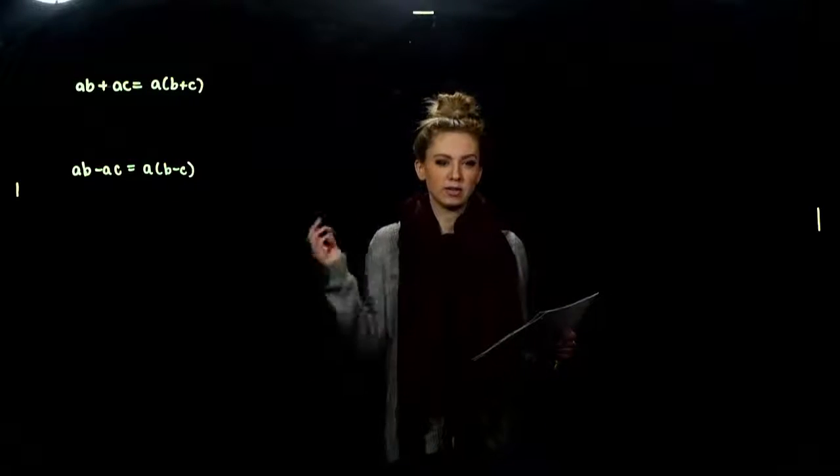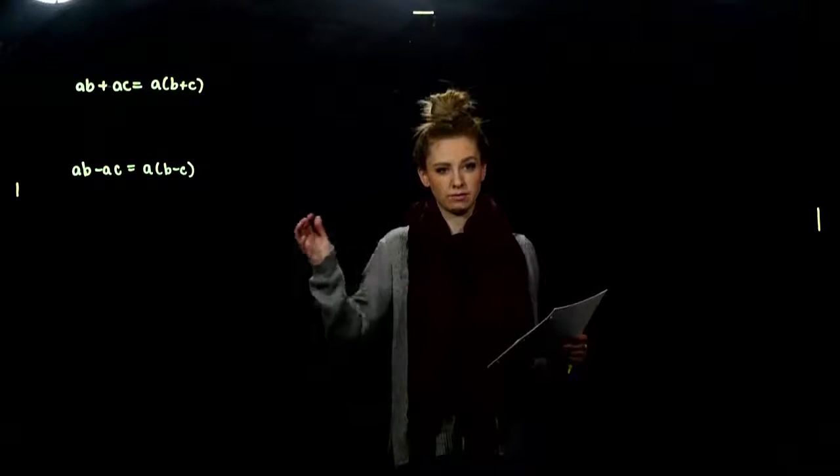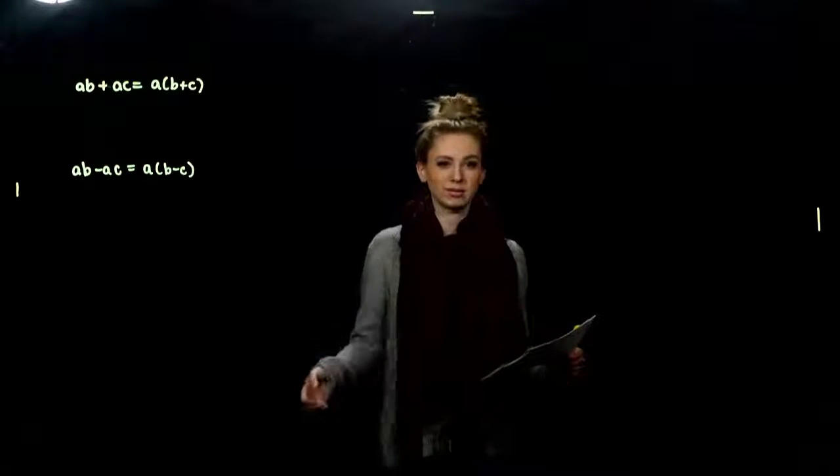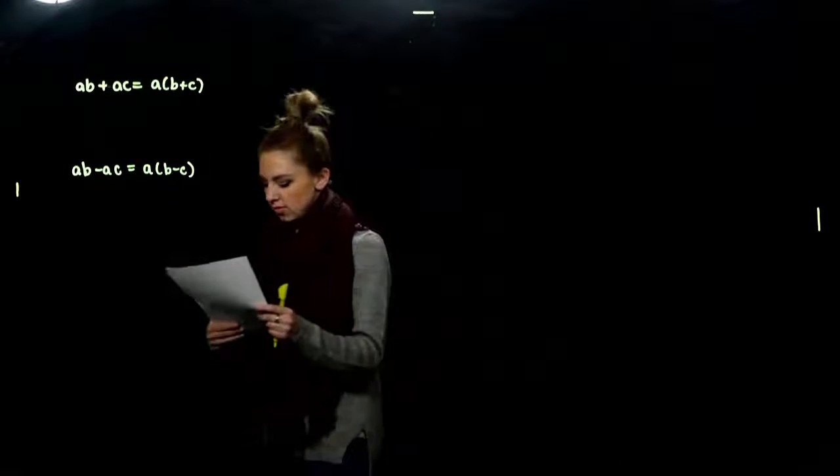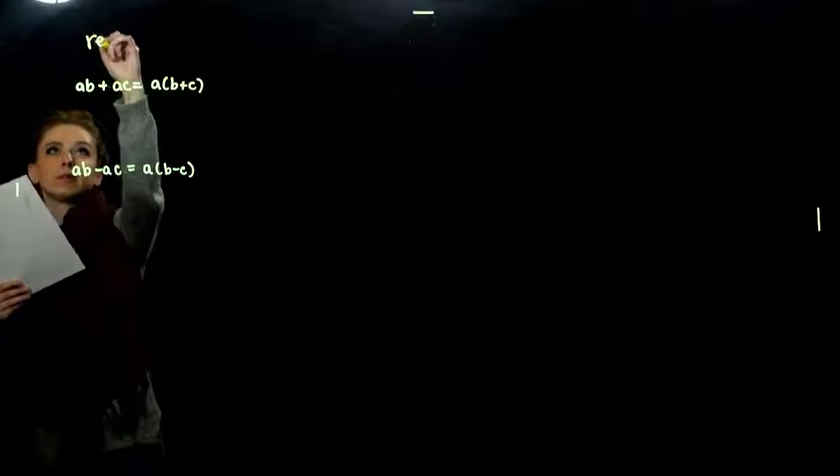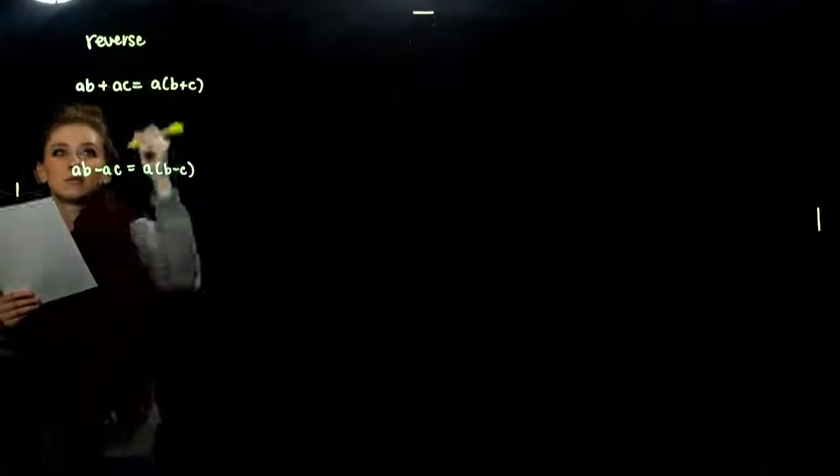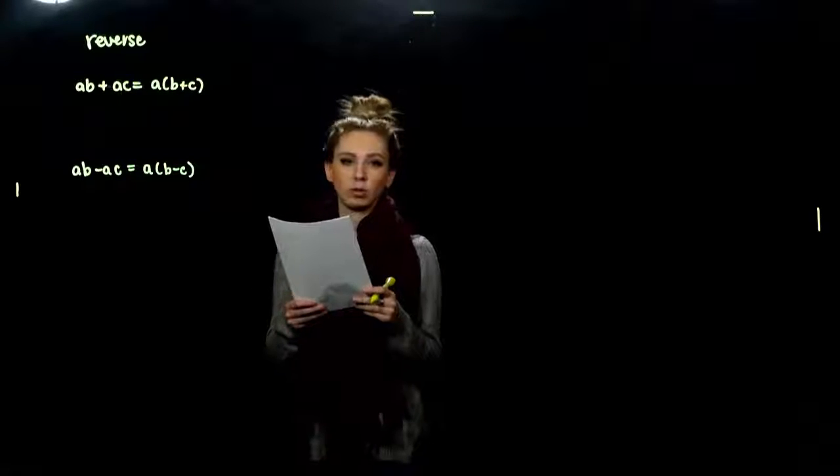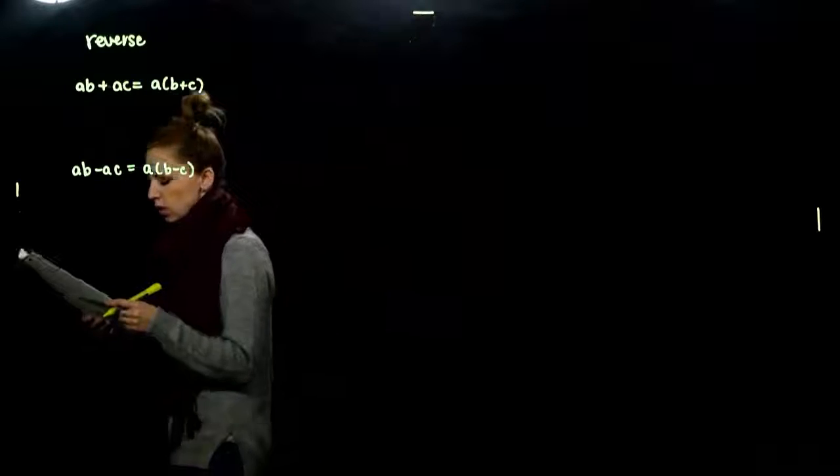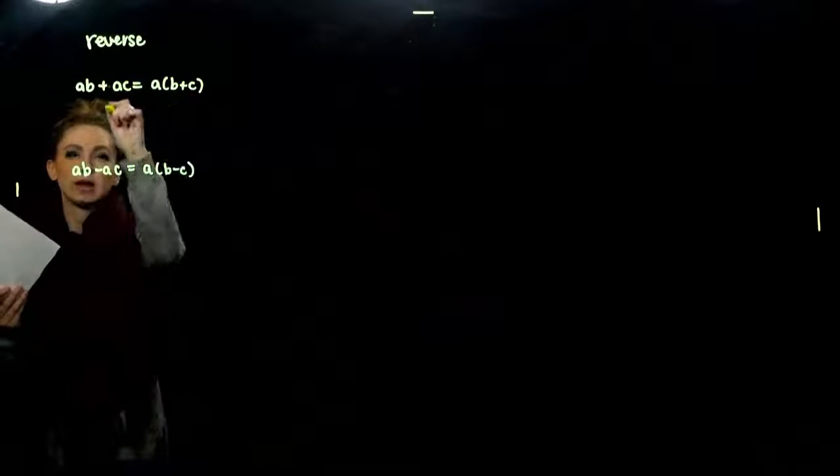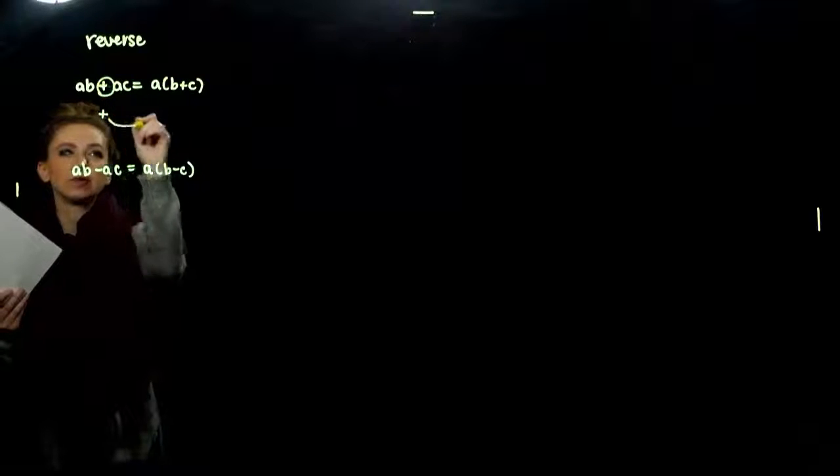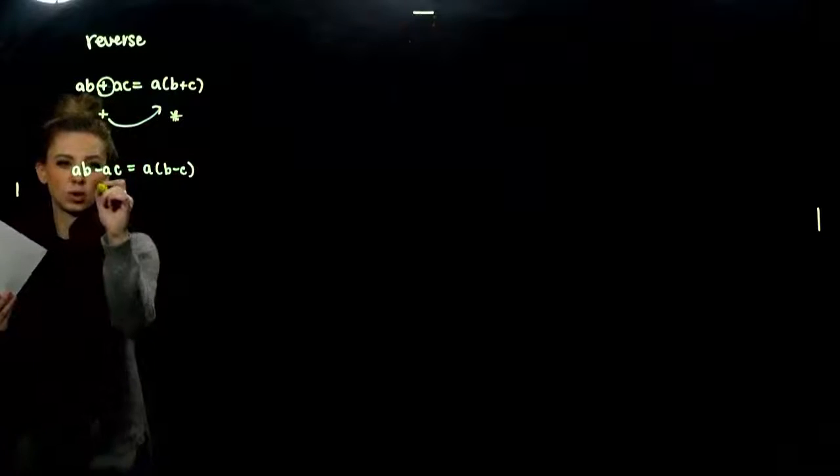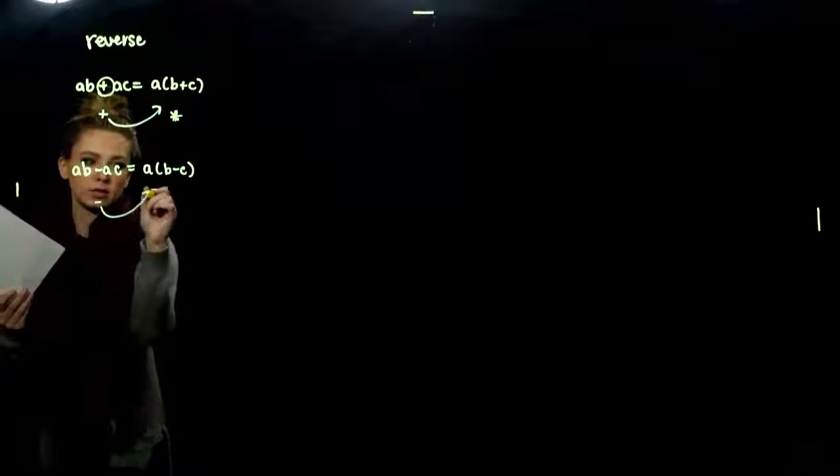So, since we can multiply now, the last part of this section is going in reverse. If I have some polynomial or some expression and I want to take out things that are in common, what is that called? Factoring is the reverse of multiplying.